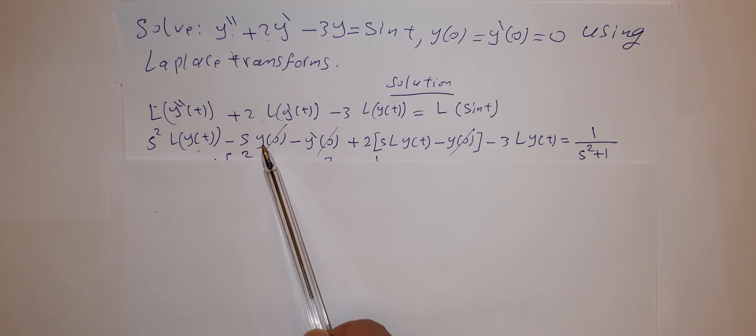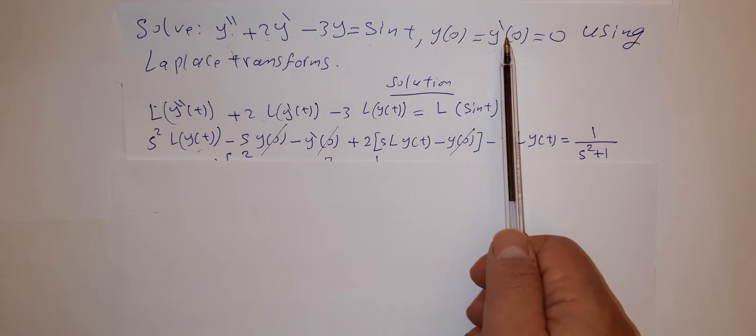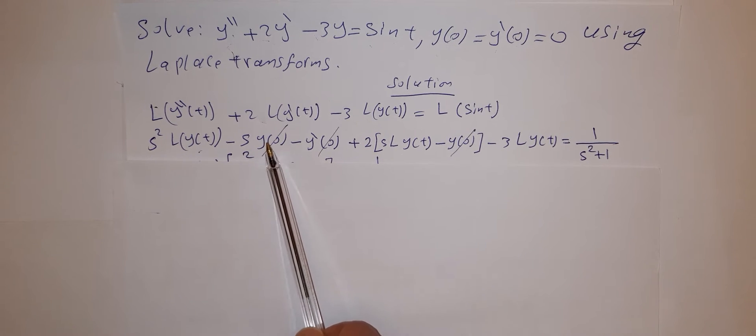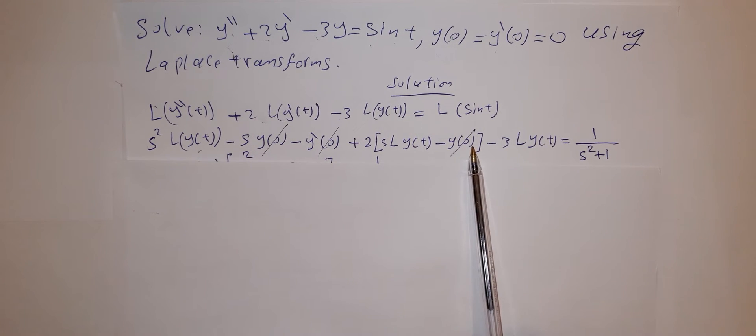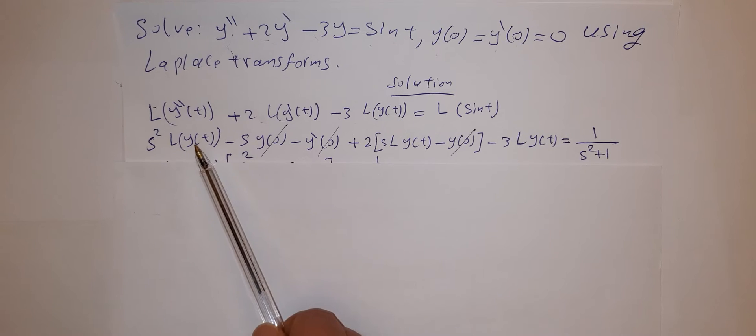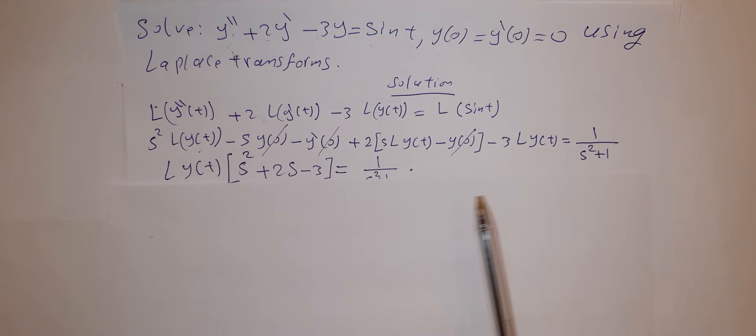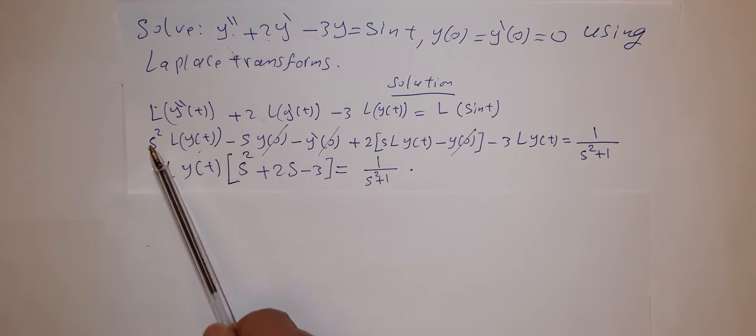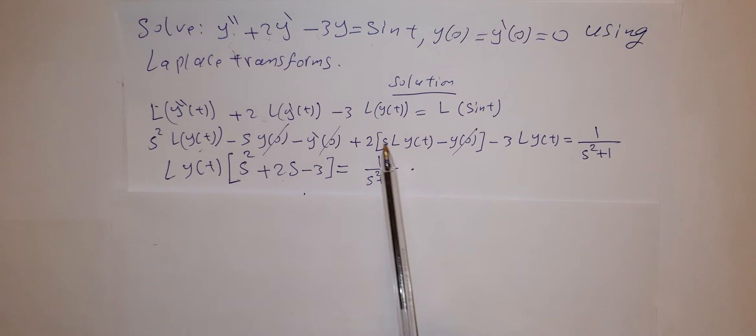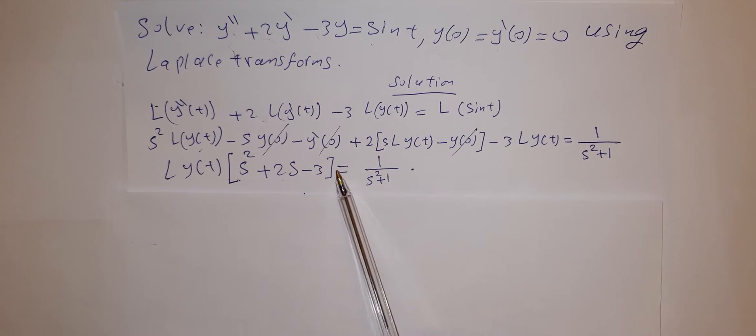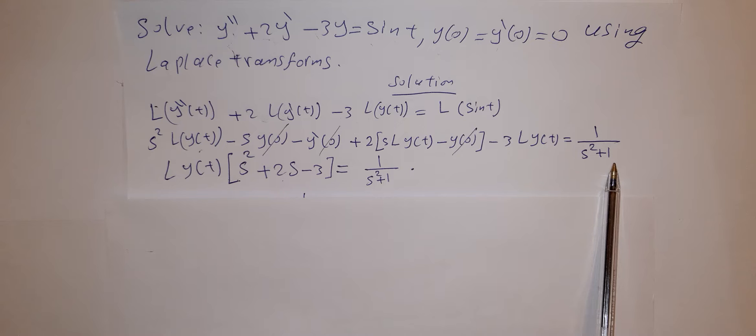Now substitute the initial conditions y of 0 and y prime of 0 equals 0. These terms have been eliminated, and you can take Laplace y of t as a common factor. So you have Laplace y of t times s squared plus 2s minus 3 equals 1 over s squared plus 1.